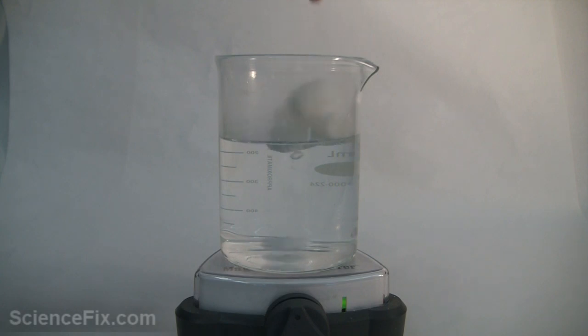We are putting some of the starch pellets into a beaker of warm water. We have a magnetic stir bar at the bottom. We want to dissolve the starch material into the water.